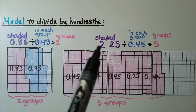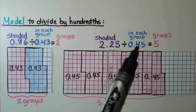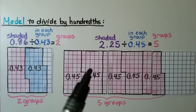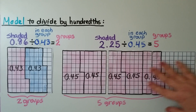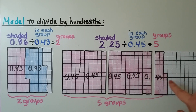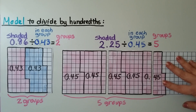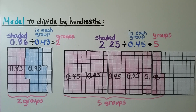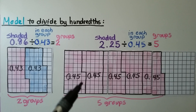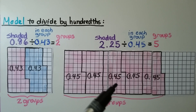Now we have 2 and 25 hundredths divided by 45 hundredths. We're going to use a few models. We have two whole models and then a partial one. We count out groups of 45 squares — since each square is a hundredth — and we find we have 5 groups. It's equal to 5.